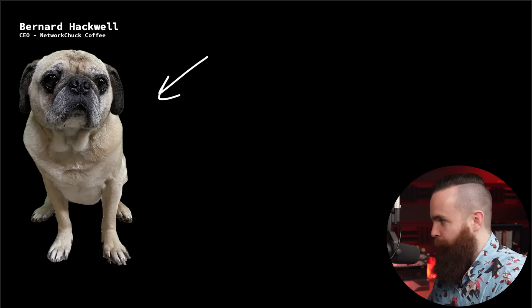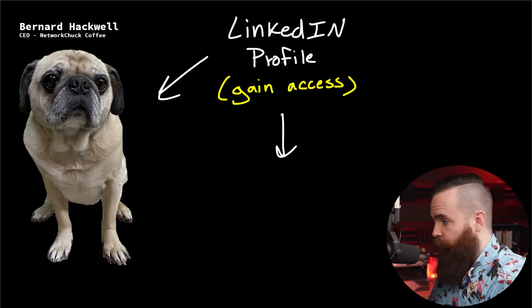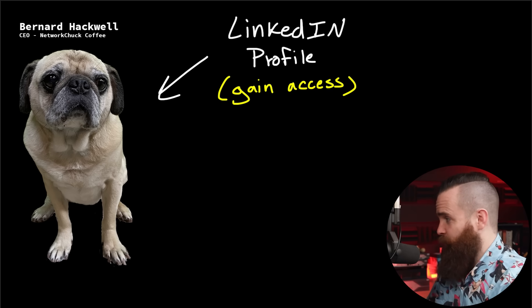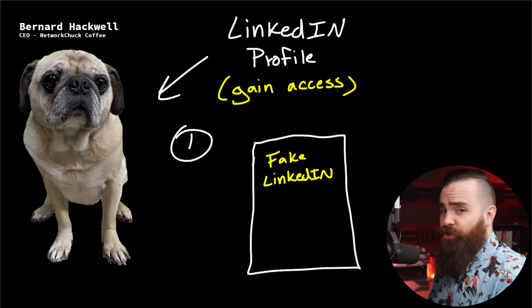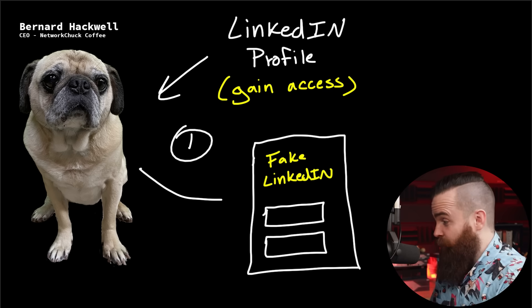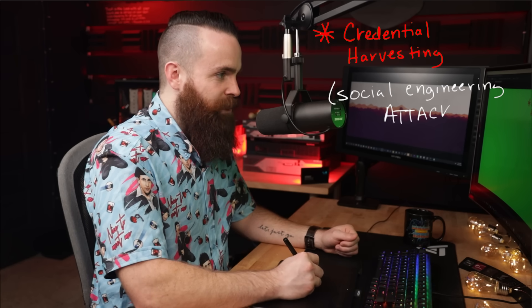My first phase in hacking Bernard Hackwell is to gain access to his LinkedIn profile. The easiest way is to find out his credentials — I need that username and password. We're going to trick him using social engineering. Step one is setting up a fake LinkedIn webpage that looks just like LinkedIn, with a username field and a password field. When Bernard enters his credentials on this fake webpage, we'll be listening. This is called credential harvesting, one of many social engineering attacks.